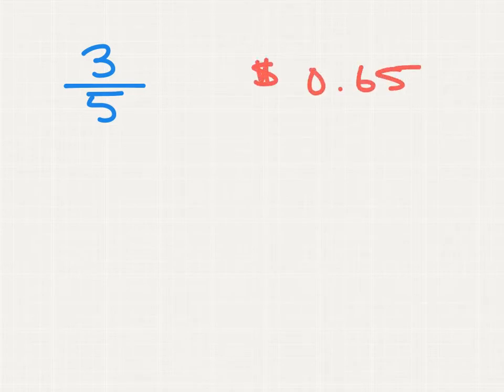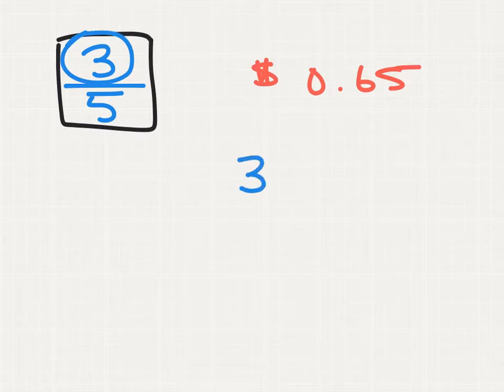So, one person has three-fifths of a dollar, while the other one has 65 cents. And we want to know who has more money or who has less. So, we're going to rewrite our fraction as a decimal so we can more easily make a direct comparison between these two values. How do I rewrite a fraction as a decimal? I simply do what it tells me to. We know that a fraction is a division problem. So, we're going to divide our numerator of three by our denominator of five.